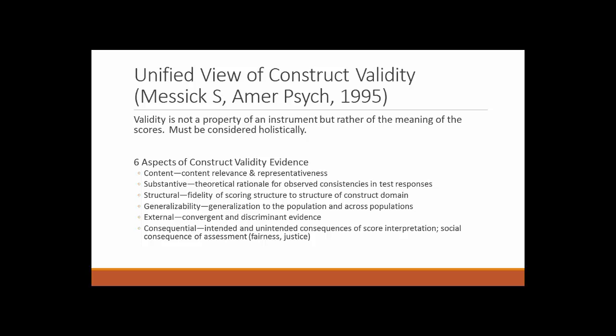There's also a unified view of construct validity. Validity is not a property of an instrument, but rather of the meaning of the scores, and it must be considered holistically. There are six aspects that constitute construct validity evidence. First, content — content relevance and representativeness. Second, substantive — theoretical rationale for observed consistencies in test responses. Third, structural — the fidelity of scoring structure to structure of the construct domain. Fourth, generalizability — generalization to the population and across populations. Fifth, external — convergent and discriminant evidence. And finally, sixth, consequential — intended and unintended consequences of score interpretation and the social consequences of assessment.